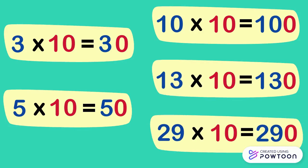So what do you notice? We notice that each time we multiply a number by 10, we rewrite the number, then we put the 0 to the right side of this number.